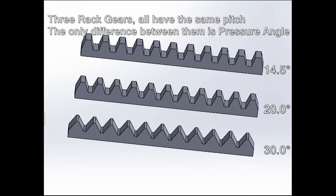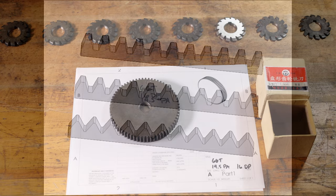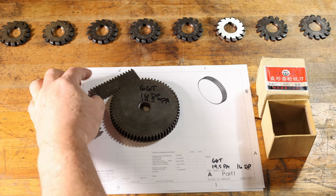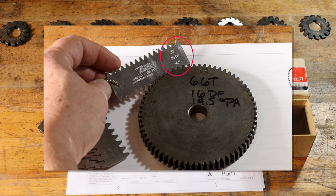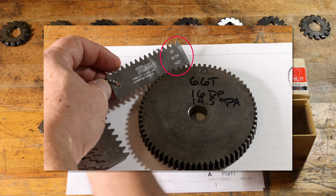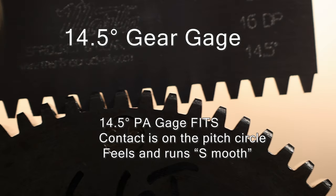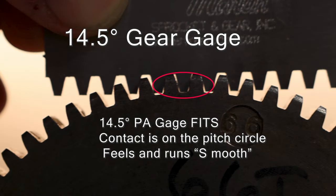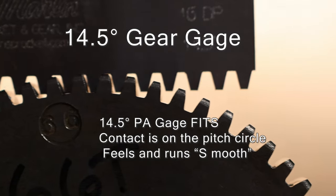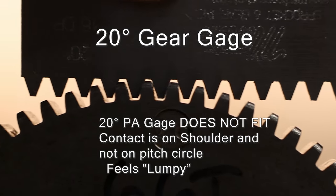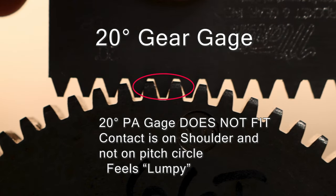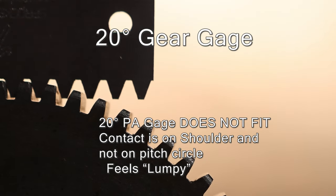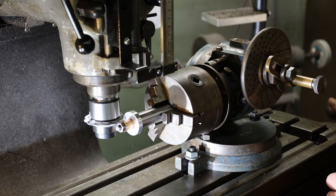Acme gears have a 29-degree included angle, which is a 14 and a half degree pressure angle — a shared number with gears and something you might recognize when you look at the lead screw on your lathe. Here we are trying to use a gear gauge to measure our gear. There's one that does both 14 and a half and 20 degrees. They both roll on the gear just fine at first glance, but here's how you really tell the difference: if it makes contact at the pitch circle — just like the definition — it fits. When rolling the 14 and a half degree gauge and it shows contact, that's when you know you've got it. The 20-degree gear gauge, by contrast, fits on the shoulder and runs on the shoulder, not on the pitch circle.